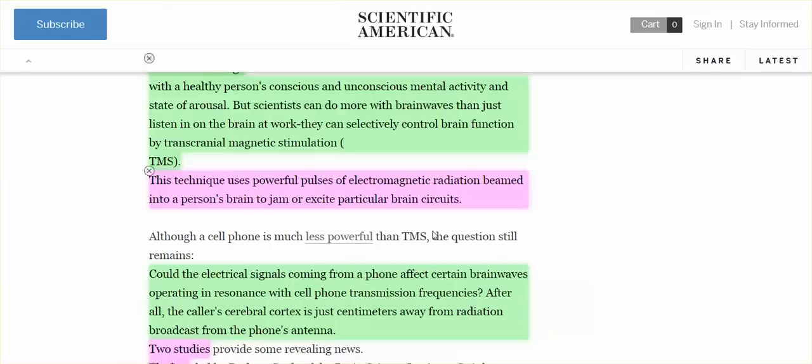And I will tell you, this is a transcranial electromagnetic stimulation for your brain. Cell phones, cell towers, Gwen towers, all these electronic gadgets, smart meters, Wi-Fi are pulsating powerful electromagnetic radiation.